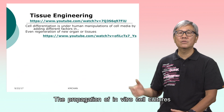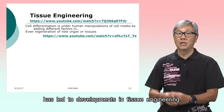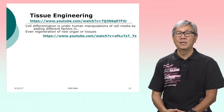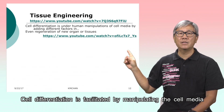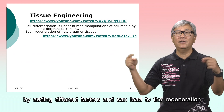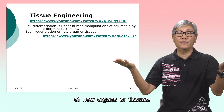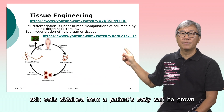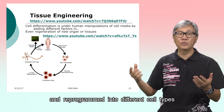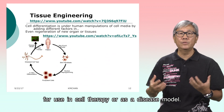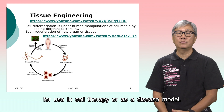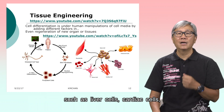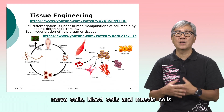The propagation of in vitro cell culture has led to developments in tissue engineering. You may watch these videos for more information. Cell differentiation is facilitated by manipulating the cell media by adding different factors and can lead to the regeneration of new organs or tissues. For instance, skin cells obtained from a patient's body can be grown and reprogrammed into different types of cells for use in cell therapy or as a disease model. Stem cells can also be used to make a variety of cells such as liver cells, cardiac cells, nerve cells, blood cells, and muscle cells.